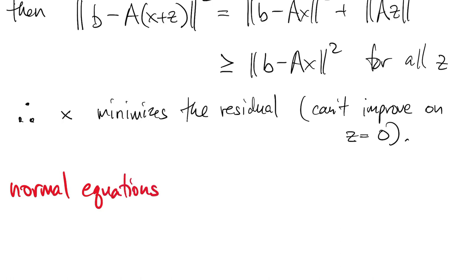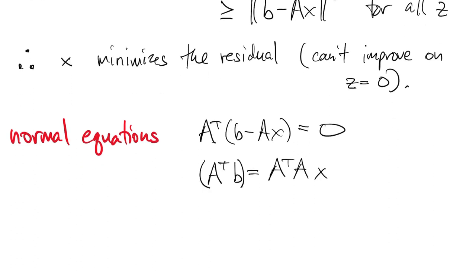So that's what leads us to define the normal equations. It's that thing that made that middle term vanish. We can also rewrite it as a transpose b is equal to a transpose times a times x.